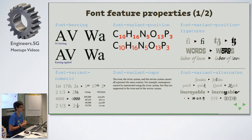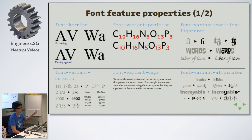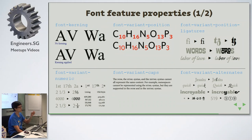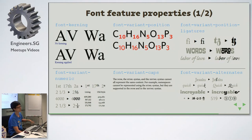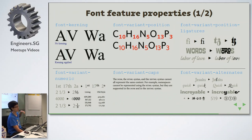There are also font feature properties, which allow you to use OpenType features — since we mentioned OTF earlier. The most common ones let you adjust kerning, font variant position, and toggle ligatures — all controllable via CSS. There's an older value, font-feature-settings, that gives you access to over a hundred OpenType properties, but using the named font variant properties is preferred since those cover the most common use cases.